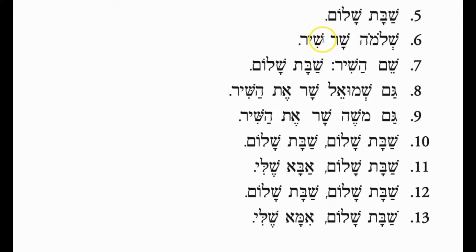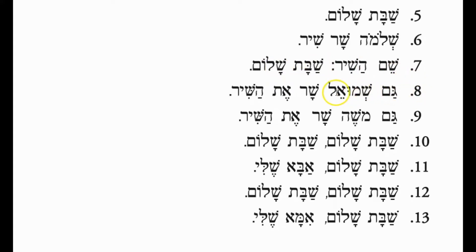Shar sings Shir — a song. Line 7: Shemesh — the name of the song is Shabbat Shalom. Line 8: Gam Shmuel Shar Et HaShir — also Shmuel sings Et HaShir, he sings the song.